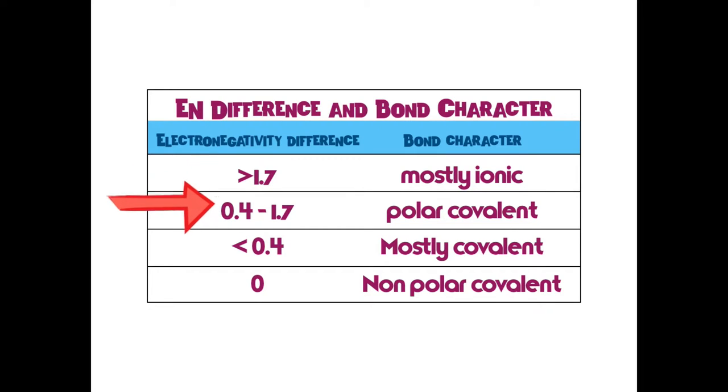If it has 0.4 to 1.7, it is a polar covalent. So now the bottom three categories are covalent bonds, but there are three different levels of covalent bonds. The first one, which we have our arrow on, this type of polar covalent bond means that they don't share evenly at all. One is way more electronegative than the other.